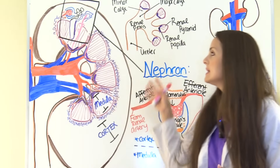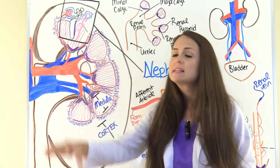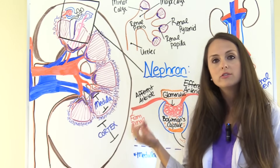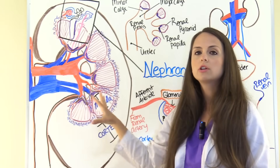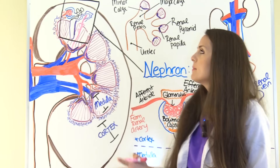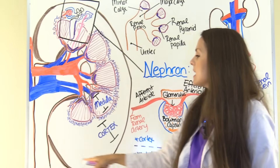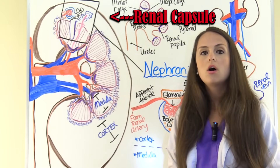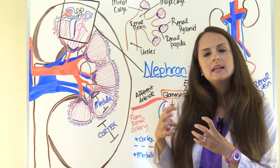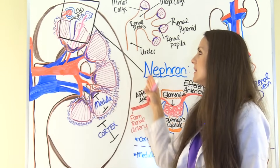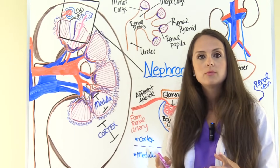Now let's look at the inside of the kidney. If you took a kidney — which is like a little bean shape, like kidney beans, but a lot bigger — and cut it in half, this is what it would look like on the inside. Around the kidney is an outer capsule called the renal capsule. This capsule gives the kidney its shape, but it also helps protect the kidney from any infection that may be present in other organs, because we don't want our kidneys to become infected.